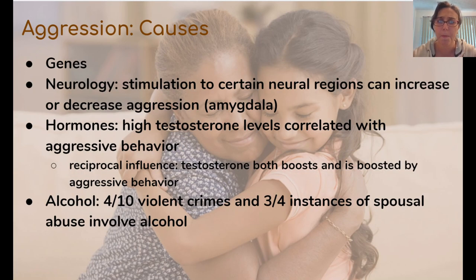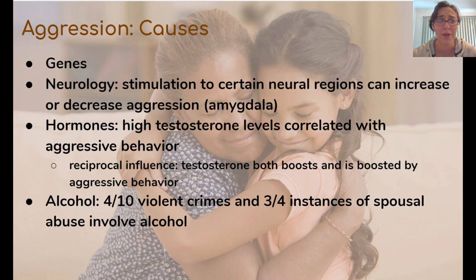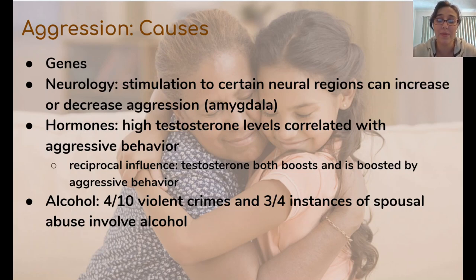We're going to start with aggression. Aggression basically means hostility towards another human being. It can be verbal aggression like yelling, insults, and cursing, or it can be physical aggression like fighting. We also talked about relational aggression before, which is when you try to damage someone's standing within a social group. All of these types of aggression have similar causes. One cause is genetic — you can have a genetic predisposition to be more or less aggressive, which is part of your temperament when you're born. It can also be neurological: increased stimulation to the amygdala increases aggression.